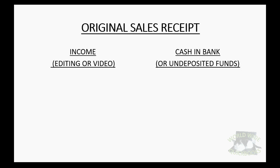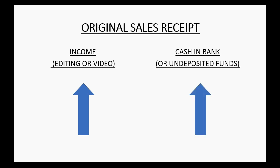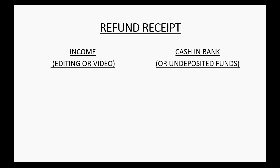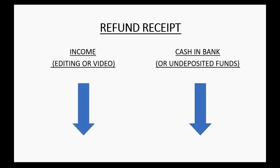You must use the same items or income accounts that were on the original sale receipt that is being refunded. On the original sale receipt, the income went up when you put the item onto the receipt. And when they paid you, either cash and bank or undeposited funds went up. That means when you make the refund receipt, cash and bank will go down because you're paying back money. But the original income account that went up for the original sale receipt will go down by the amount of the refund.